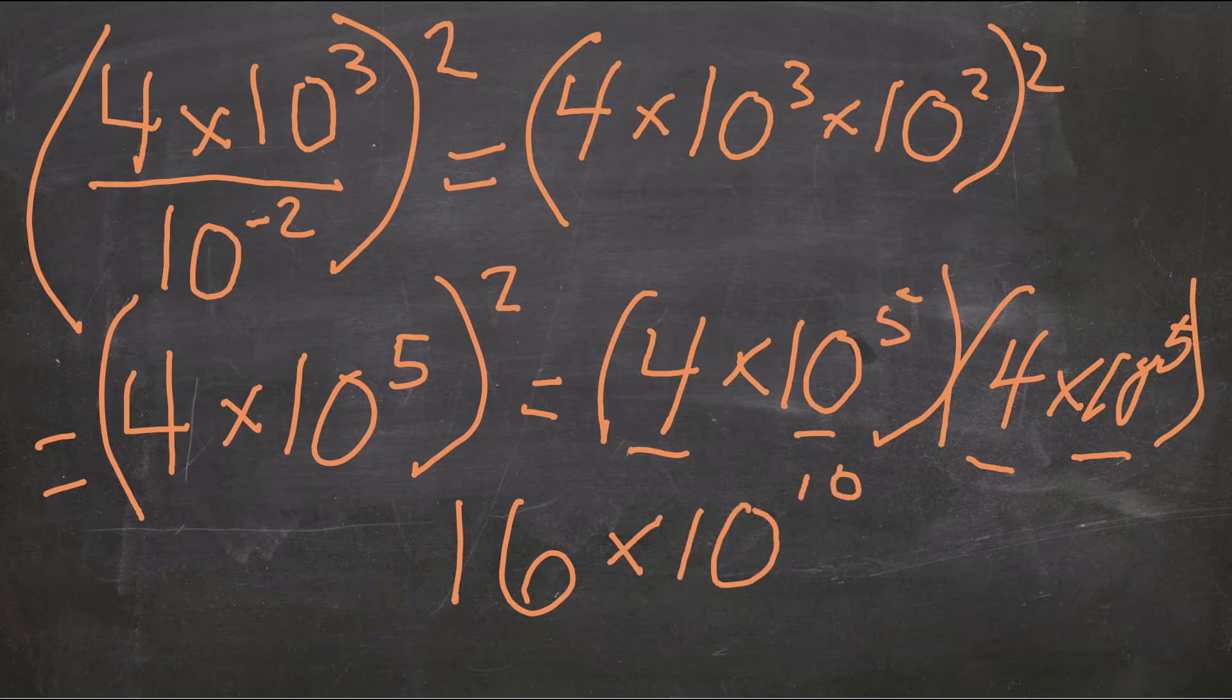But remember, this is scientific notation, so that first number right there, 16, can't be 16. We need to rewrite it as a number between 1 and 10. So that means that the decimal needs to be moved over 1.